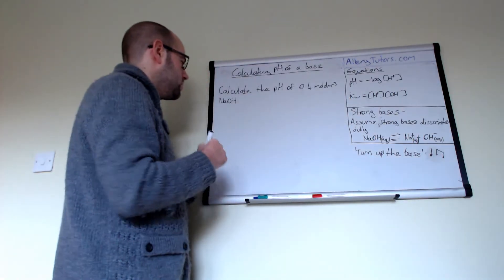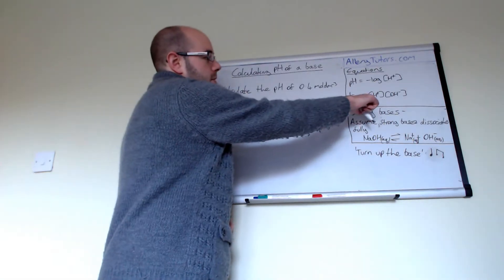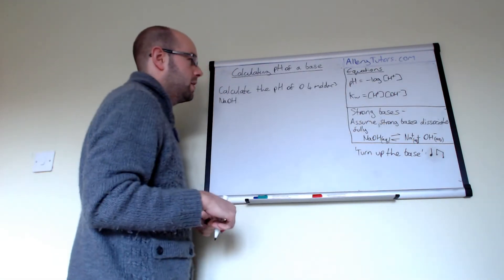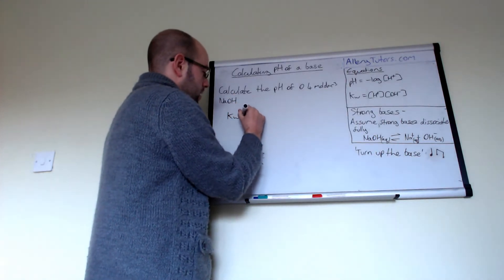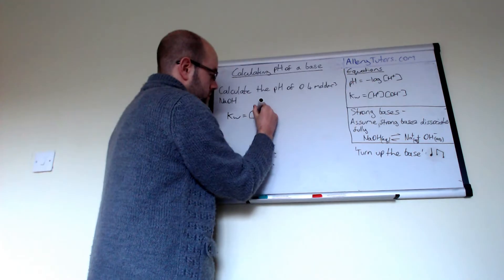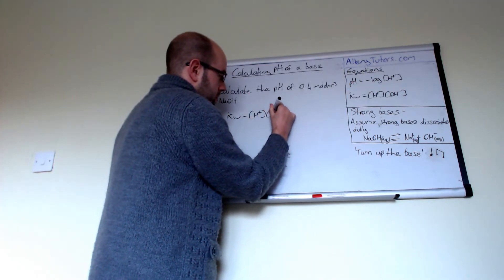We're going to use Kw first. You can see here that Kw equals H plus times OH minus. So we're going to write that on there. Kw equals concentration of H plus multiplied by OH minus.